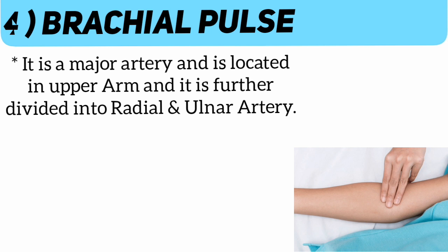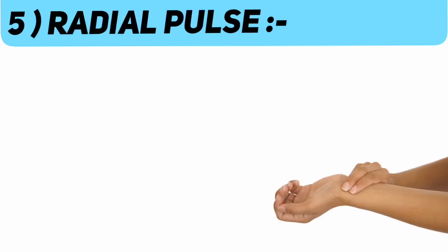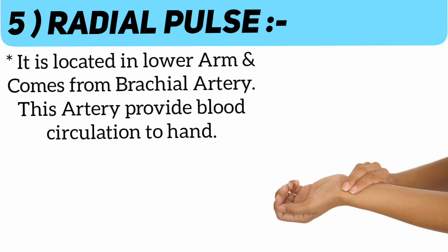Number four: brachial pulse. It is a major artery located in the upper arm and is further divided into the radial and ulnar artery. Number five: radial pulse. It is located in the lower arm and comes from the brachial artery.